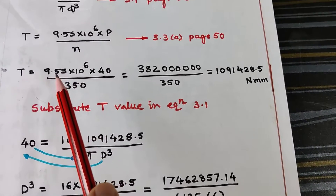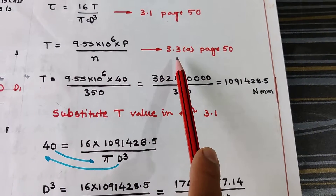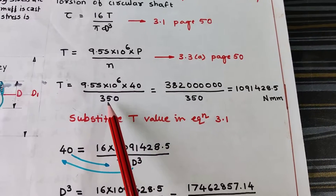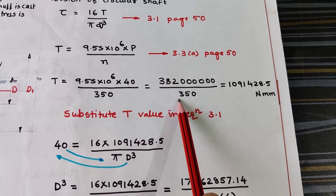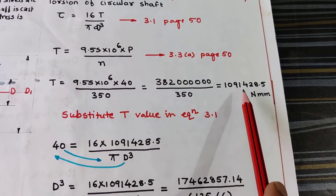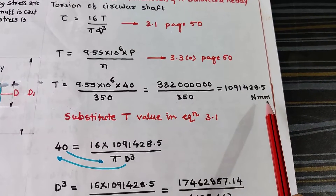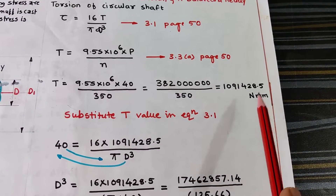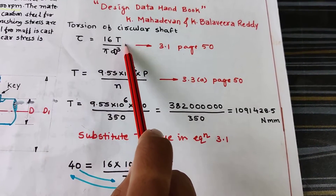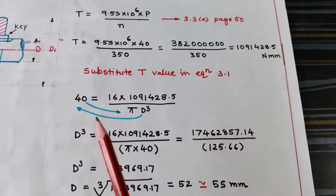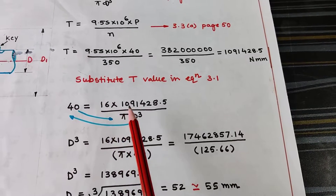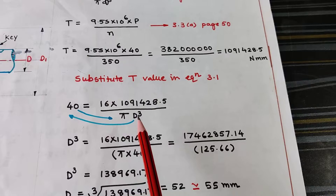Substituting the values into equation 3.3A gives a torque of 1,091,428.5 N·mm. Now substituting this torque into equation 3.1: 40 = 16 × 1,091,428.5 / (π D³).